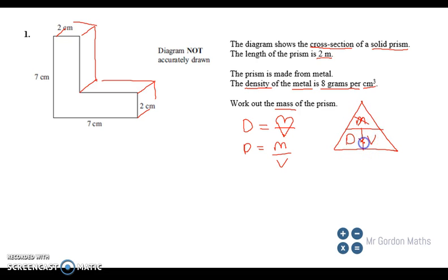So the mass will equal the density times the volume. Well, I've already got the density—the density of the metal is 8 grams per centimeter cubed, so just times it by the volume.